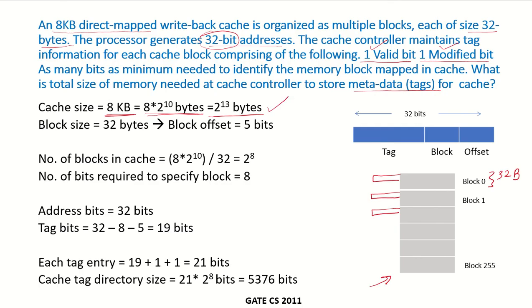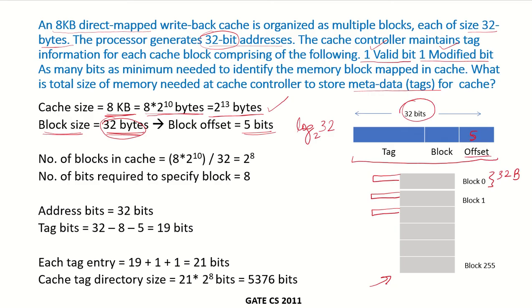The cache size is 2 to the power of 13 bytes and each block consists of 32 bytes. If this is a byte-addressable memory and we want to access any particular byte in a block, there are 32 bytes, meaning each byte can be addressed using 5 bits, which is log of 32. So out of the whole 32-bit memory address, 5 bits will be needed to specify the offset — that is, the particular byte within a block.